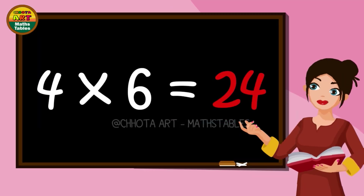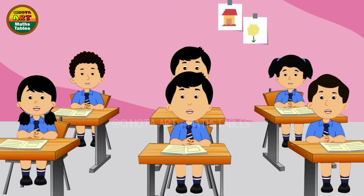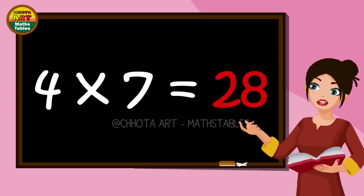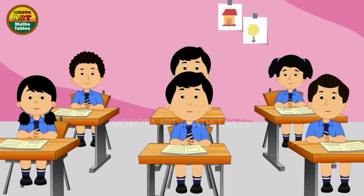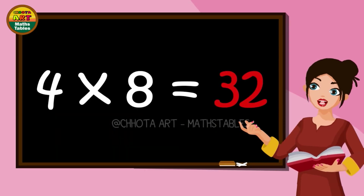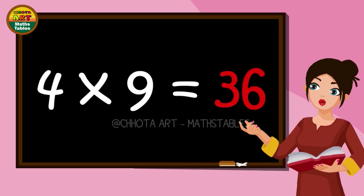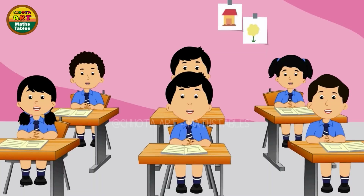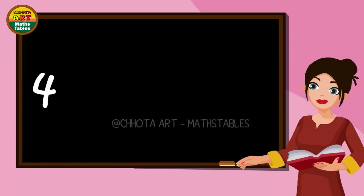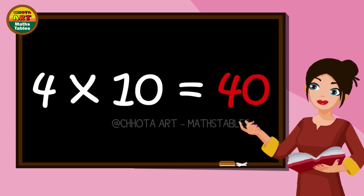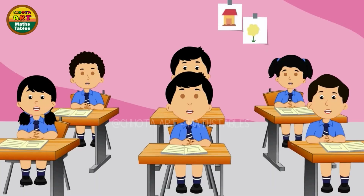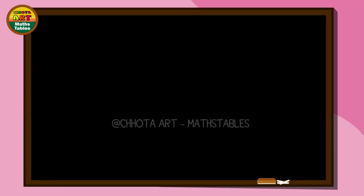4 × 6 = 24, 4 × 7 = 28, 4 × 8 = 32, 4 × 9 = 36, 4 × 10 = 40.